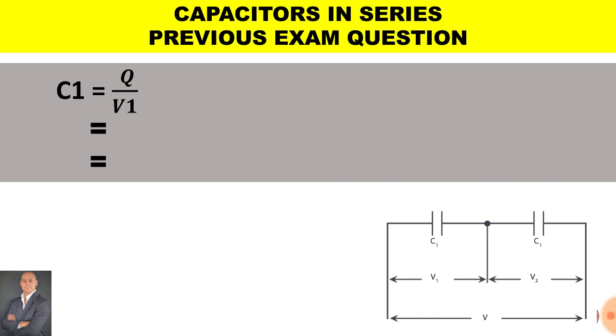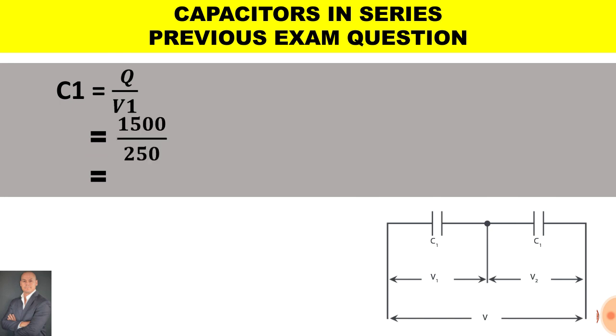To calculate C1 will be the charge over V1. The charge is 1500 microcoulombs divided by 250 volts and we end up with 6 microfarad.